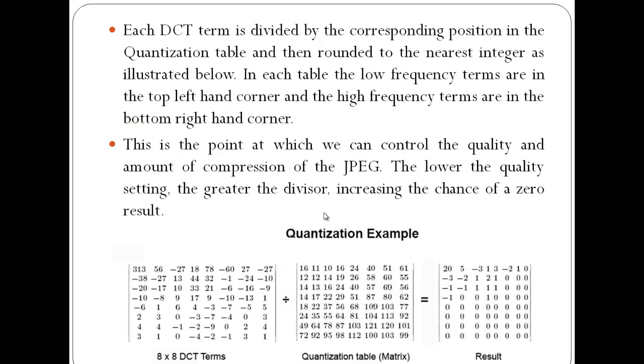In quantization, I have my 8x8 DCT terms and my quantization matrix. I divide each term with the individual element in the quantization matrix. Each DCT term is divided by the corresponding position in the quantization table and then rounded to the nearest integer.